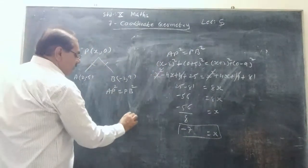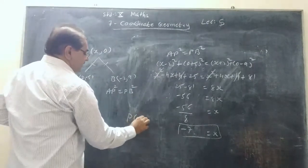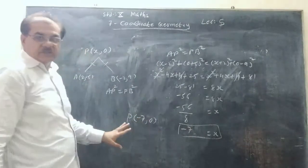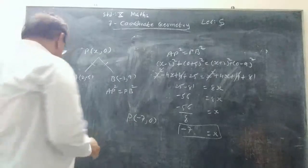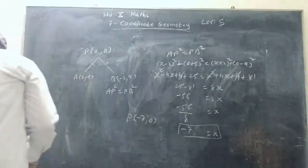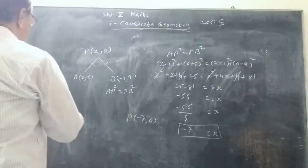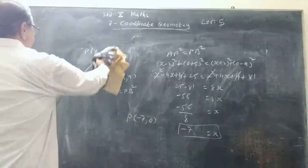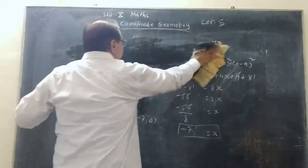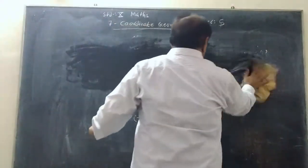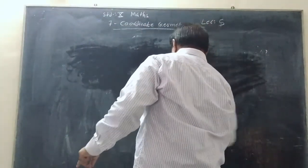So the value of x is -7. The coordinates of P are (-7, 0). Is it clear? Very easy to understand. Then we take one question of the same type but with a slight difference.